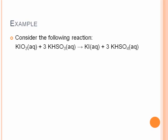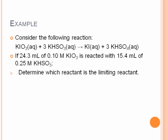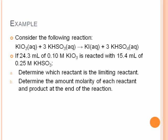So if we consider this reaction, we've got KiO3 plus 3KHSO3 react to form Ki and 3KHSO4. If we take 24.3 milliliters of 0.1 molar KiO3 and react that with 15.4 milliliters of 0.25 molar KHSO3, we'll determine the limiting reactant and we want to determine the molarity of each reactant and product at the end of the reaction.